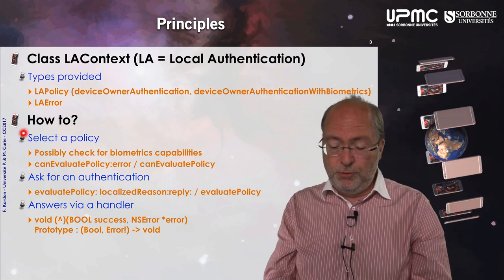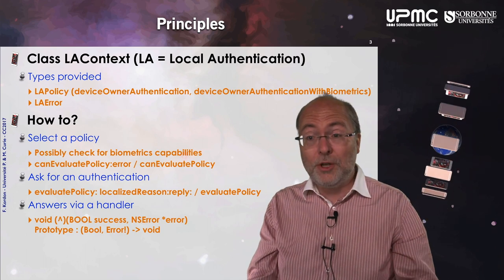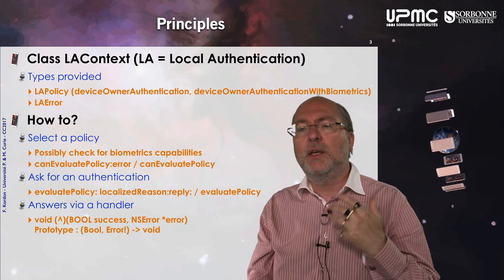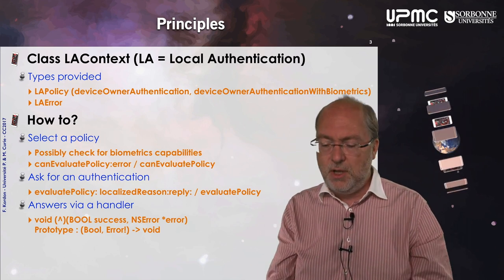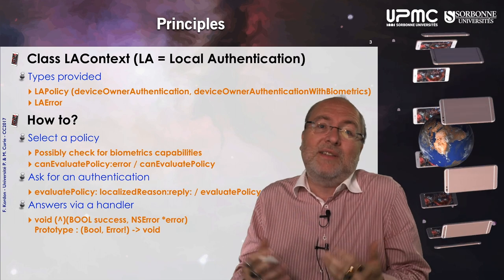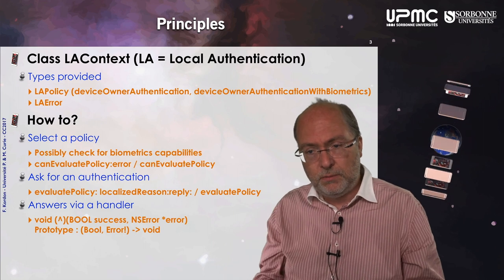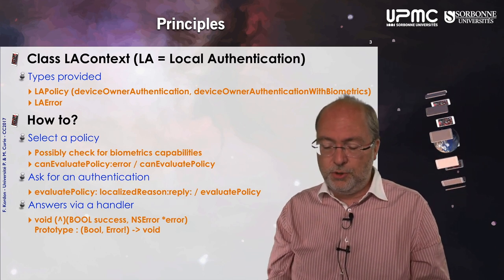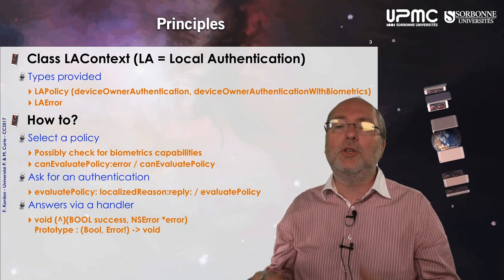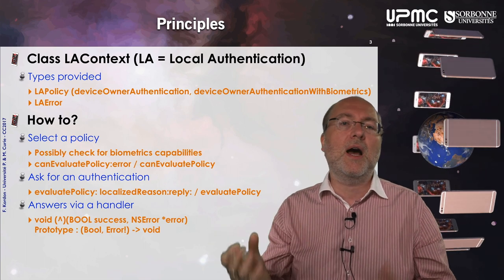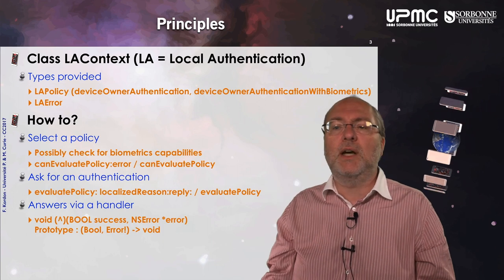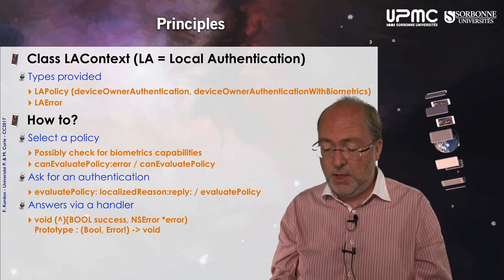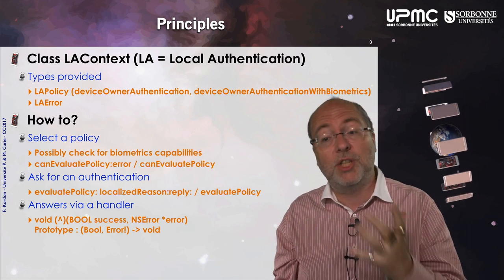How do you proceed? First, you select a policy. You can check the capabilities of the terminal to handle this policy — and this is not only true for biometrics, because if you have deactivated authentication on your terminal, then even traditional authentication will fail, as it is not available. Then you ask for authentication. You have a primitive in Objective-C and in Swift. You get a reply performed through a handler. The handler has a boolean stating whether it was successful, and if not, you can get information about why it failed.